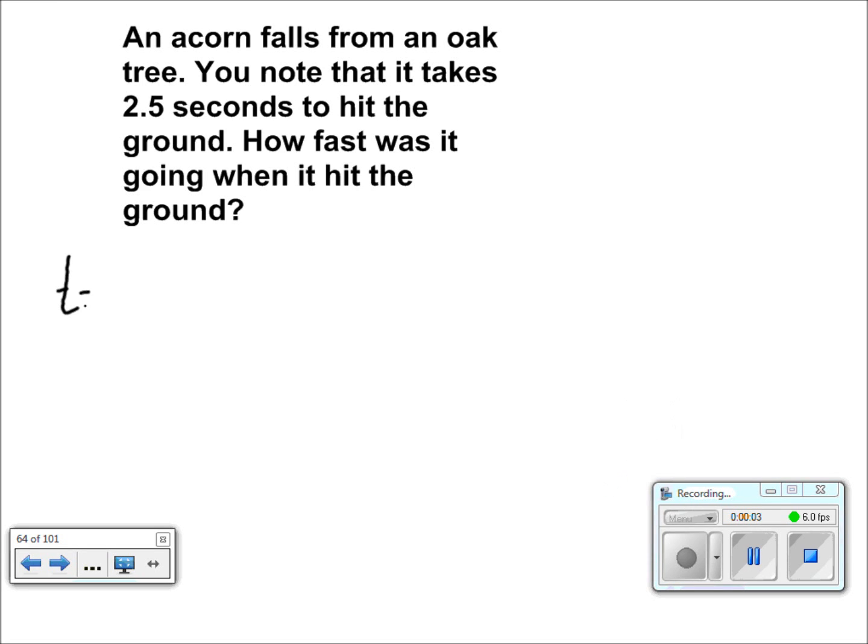In this problem we have an acorn falling from an oak tree. It takes the acorn 2.5 seconds to reach the ground. Our initial velocity is zero because the acorn starts from the oak tree and starts from rest.